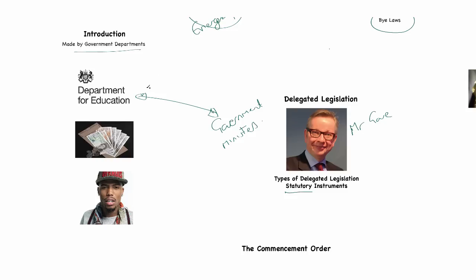As the Education Minister changes, it will be a different person, but any education statutory instrument would be done by the Education Minister through the Department for Education. The same is true of any other statutory instrument. If it was a statutory instrument on defence, it would be made by the Secretary of State for Defence through the Ministry of Defence. If it was an issue of the environment or farming, it would be made by the Minister for DEFRA through the Department for Environment, Food and Rural Affairs. So a statutory instrument is a law made by a government minister under the authority of the Enabling Act in an area of their responsibility.